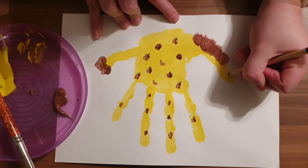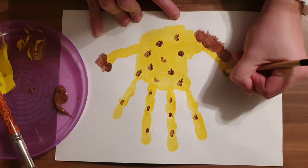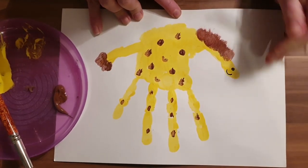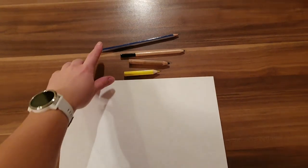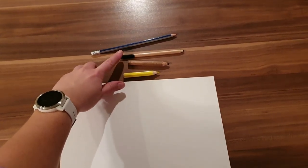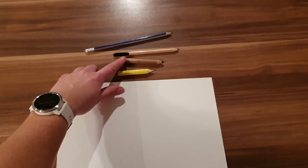You will need a piece of card, a pencil, a black coloring pencil, a brown coloring pencil, and a yellow coloring pencil. So the first thing we need to do is get our pencil and we need to trace over our hand. We're going to start at our thumb. Now you might need an adult to help you out with this.